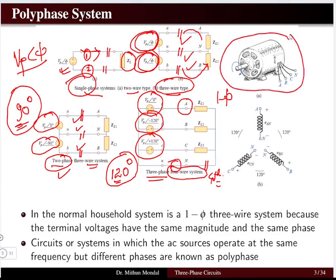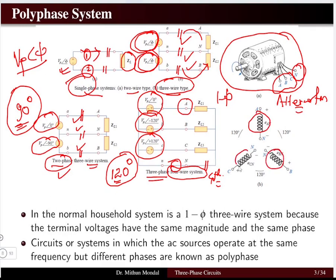A three-phase synchronous generator, also called an alternator, has three terminal wires coming out plus a neutral wire. In a three-phase system, the three wires are separated from each other by 120 degrees, giving a phase difference of 120 degrees. A three-phase system can also be made to work as a single-phase system.